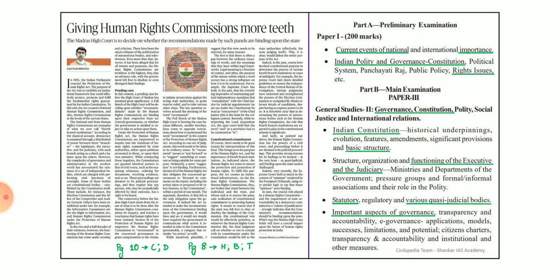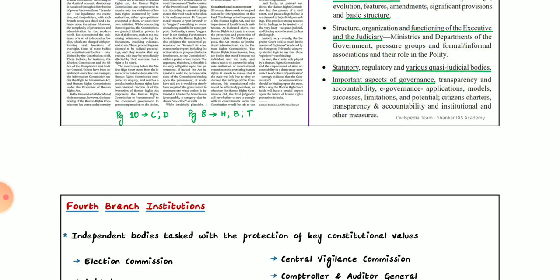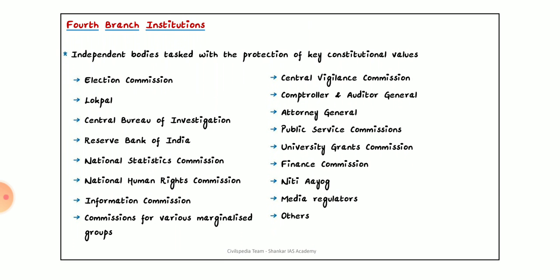The first article is related to giving human rights commission more teeth. The syllabus related to this article is given on the right-hand side. This is a question in the prelims and mains GS paper. The news discusses four branch institutions — independence body tasks with the protection of key constitutional values. Election Commission and Lokpal are 4th branch institutions.